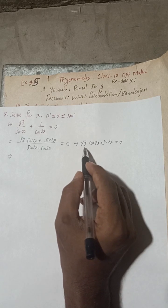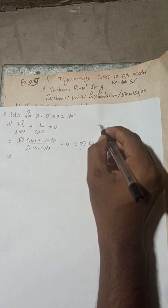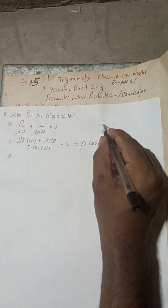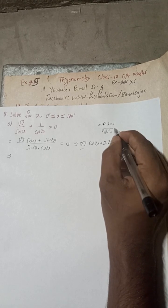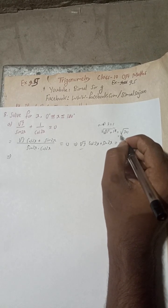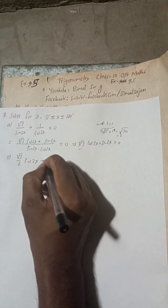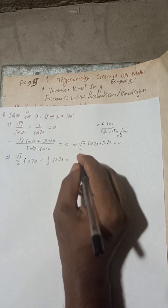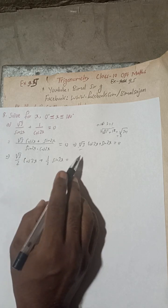This is of the form a·cos 2x + b·sin 2x. Here a equals root 3 and b equals 1. We take the square root of a squared plus b squared: root 3 squared is 3, plus 1 squared is 1, giving us 3 plus 1 equals 4, and root 4 equals 2. So we multiply the equation by 2, giving us root 3 over 2 times cos 2x plus 1 over 2 times sin 2x equals 0.